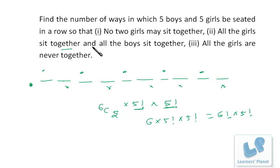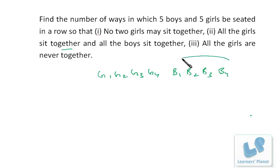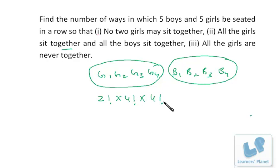The next condition is all the girls sit together and all the boys sit together. In this case, we have G1, G2, G3, G4 and B1, B2, B3, B4 — we treat each group as one. Now there are two persons, so two persons can be arranged in 2! ways. Then these four girls have to be together but mutual arrangements are possible, so four girls can be arranged in 4! ways. Similarly, four boys in four places can arrange themselves in 4! ways.